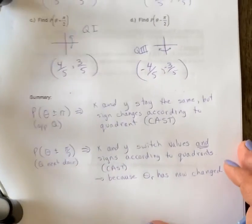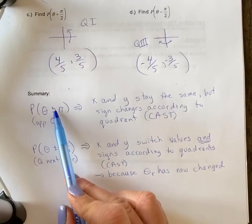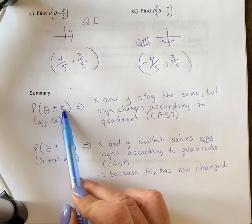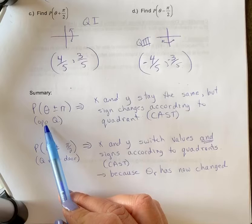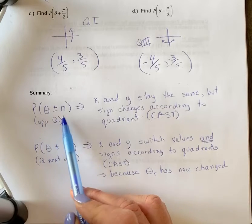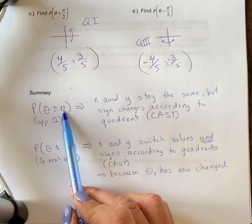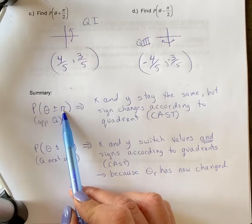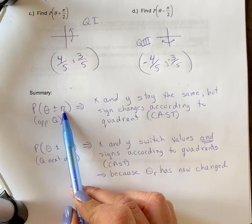So if we were to summarize this, if you end up adding or subtracting π or a multiple of π, then you end up in the opposite quadrant or multiple, I guess, odd multiple of π. If you add or subtract 2π or 4π, you end up with a coterminal angle in the same spot.